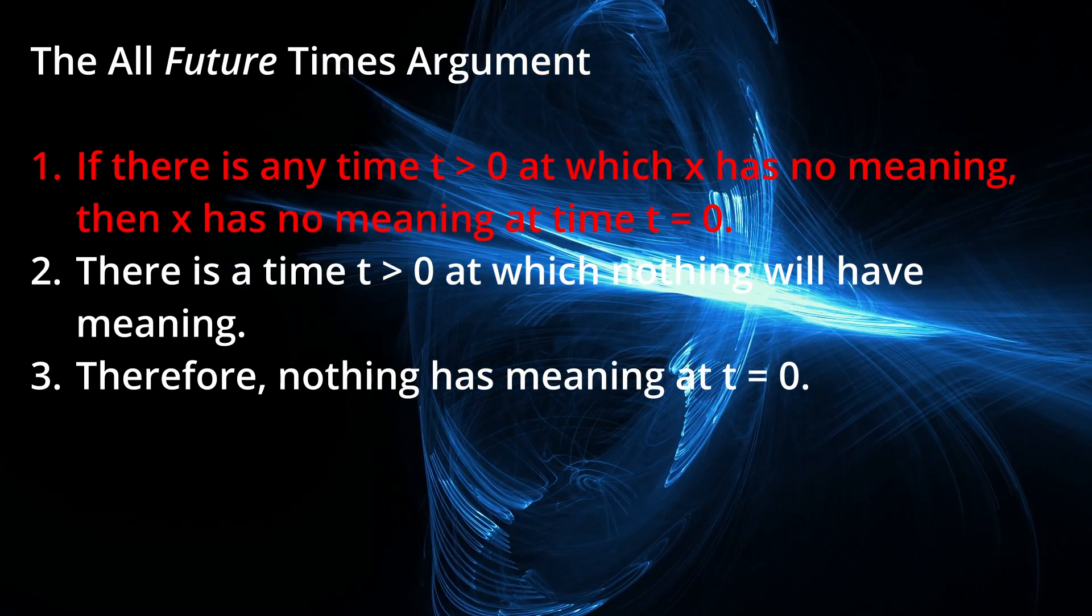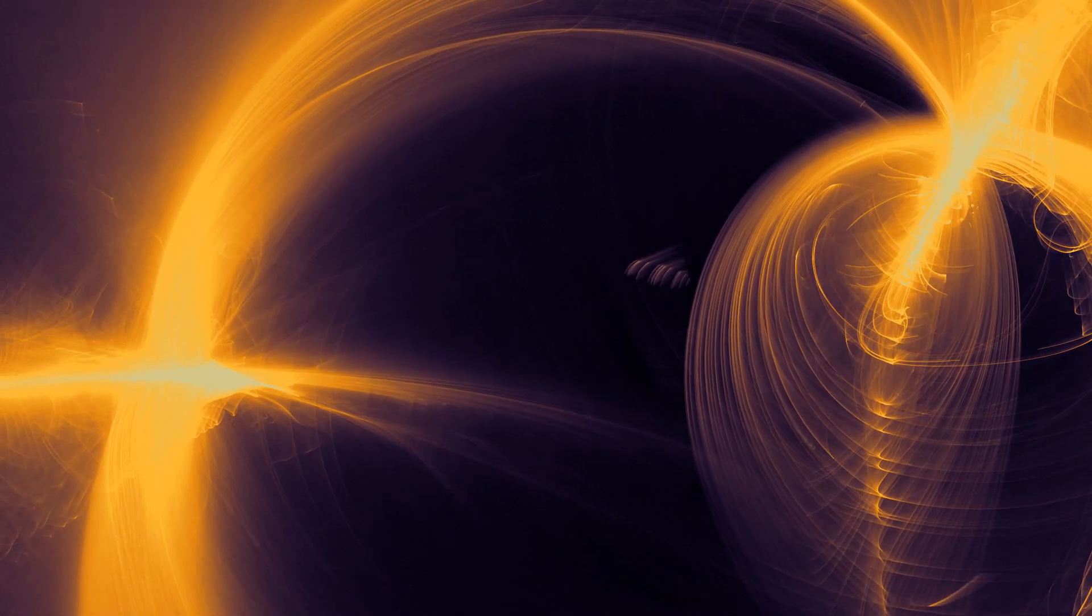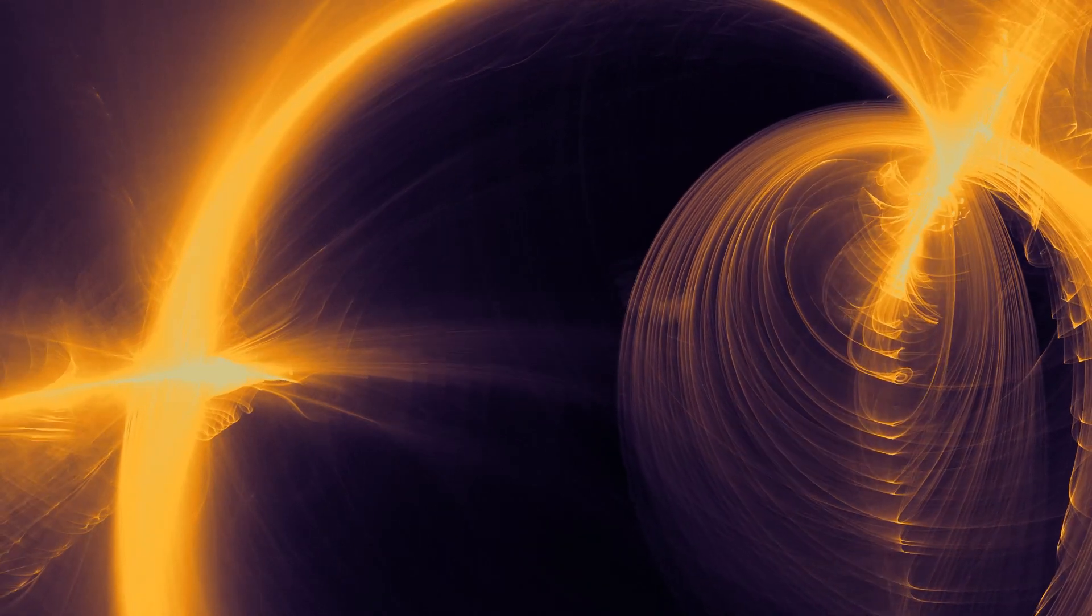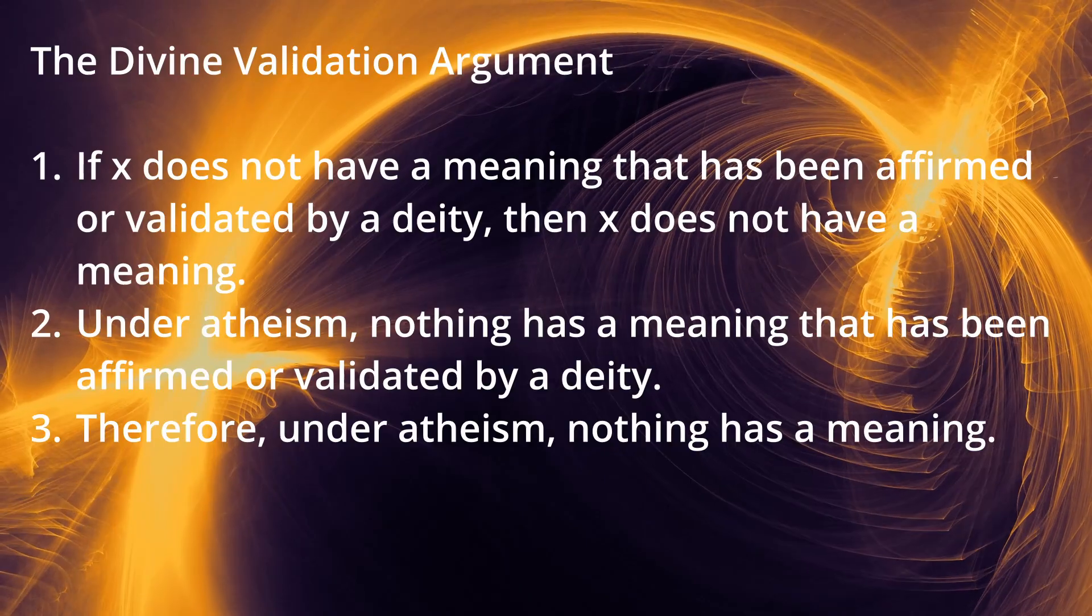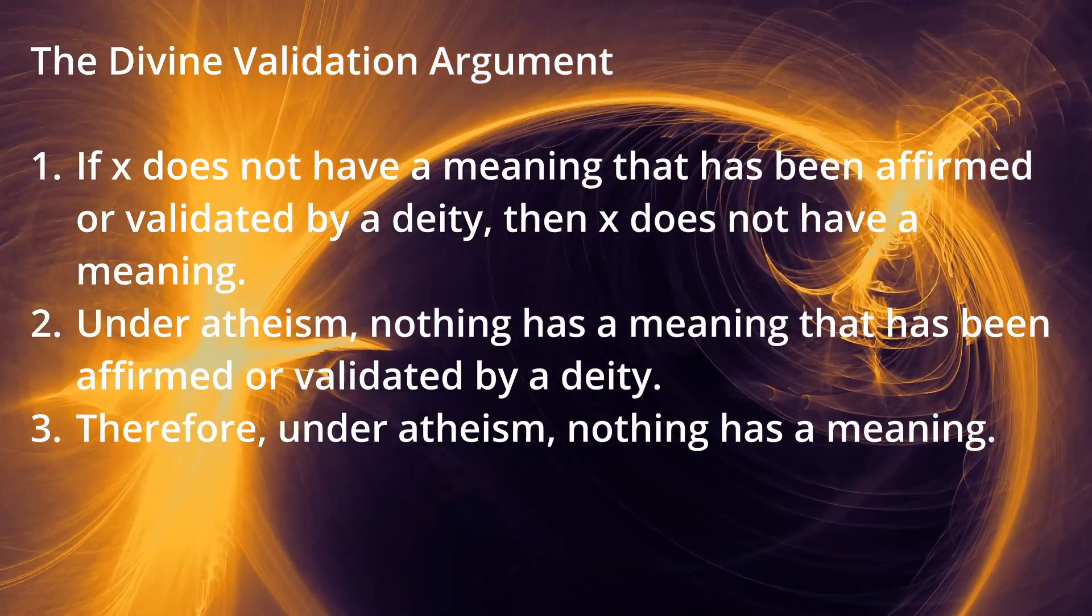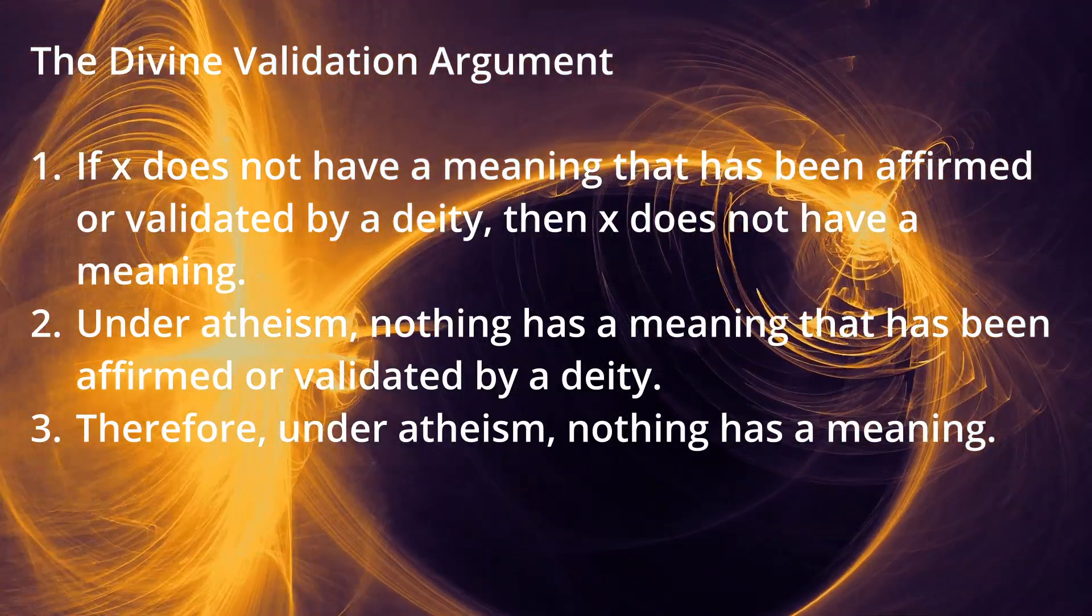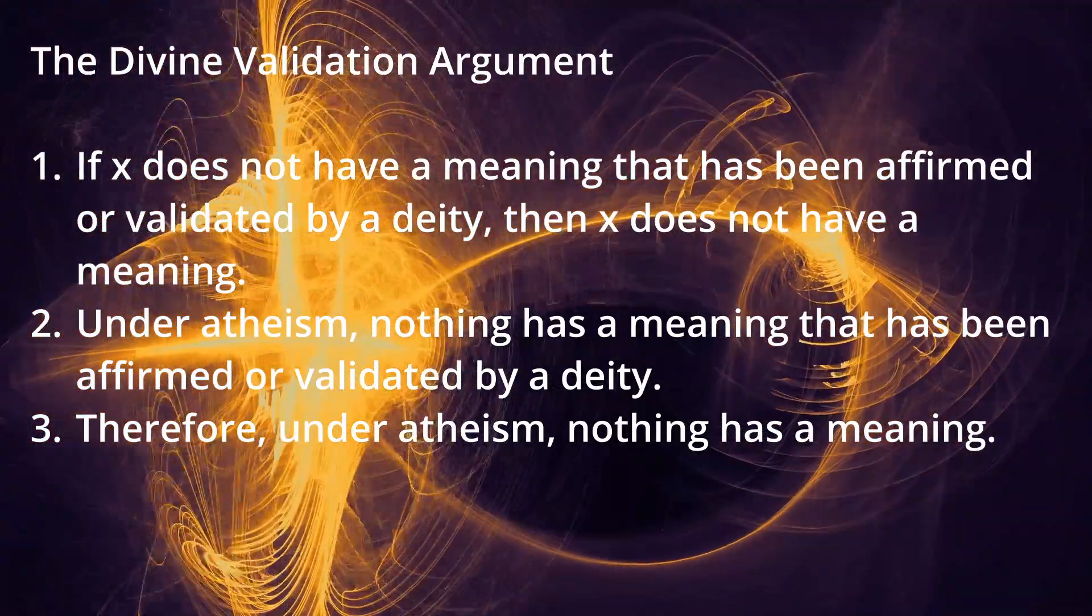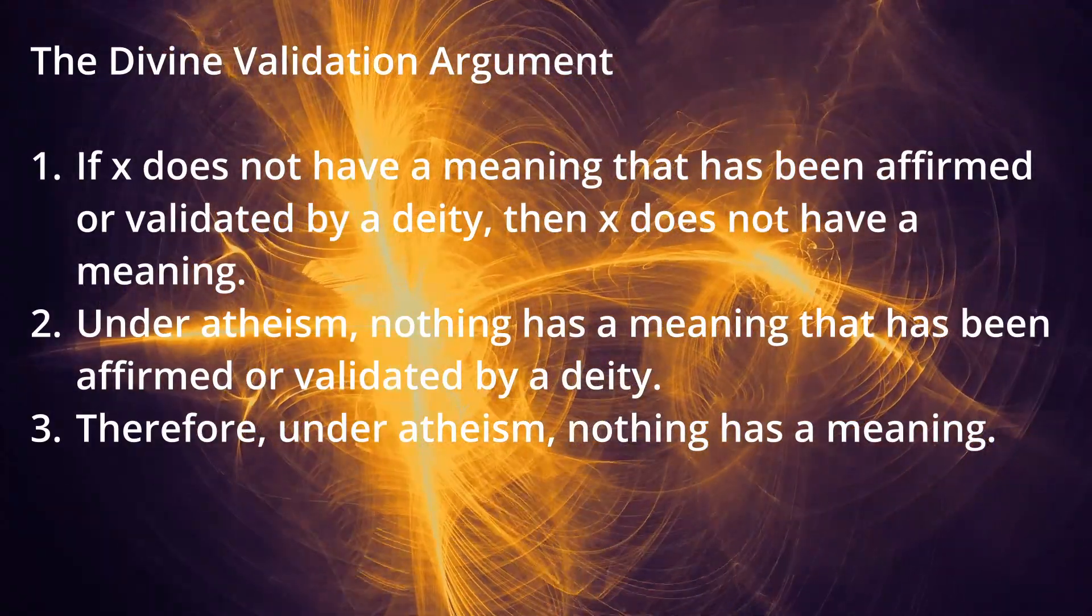Other times, apologists will say that only meaning which has been given by God, or which has been affirmed or validated by God, counts. Again, we state this formally. One, if x does not have a meaning that has been affirmed or validated by a deity, then x does not have a meaning. Two, under atheism, nothing has a meaning that has been affirmed or validated by a deity. Three, therefore, under atheism, nothing has a meaning. And again, it's easy to see that premise 1 is unsupported.